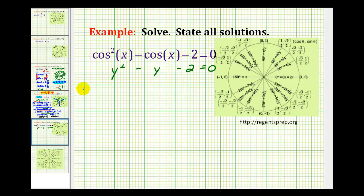So this will factor into two binomials. But instead of having factors of y in the first positions, we'll have factors of cosine x. And the second positions will be from the factors of negative 2 that add to the coefficient of the middle term or add to negative 1. So the factors of negative 2 that add to negative 1 will be negative 2 and positive 1.